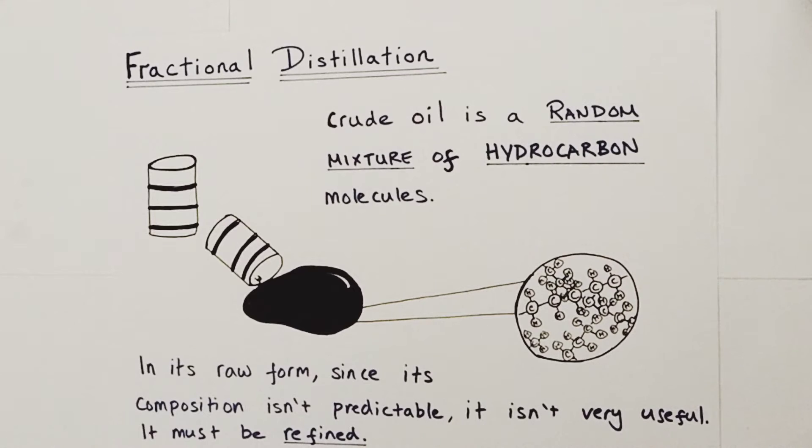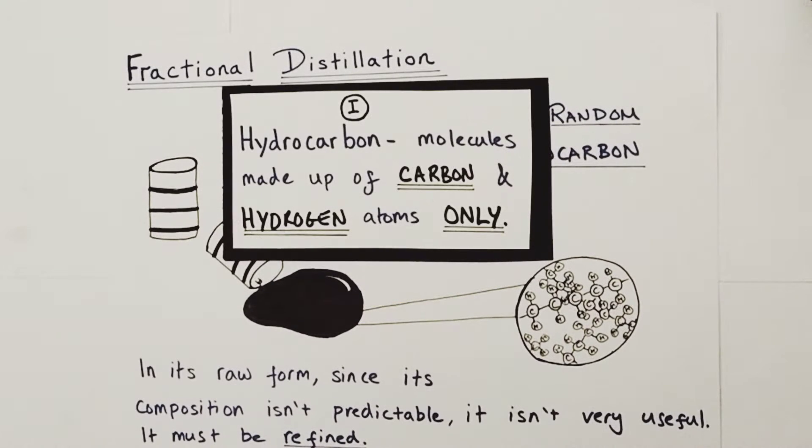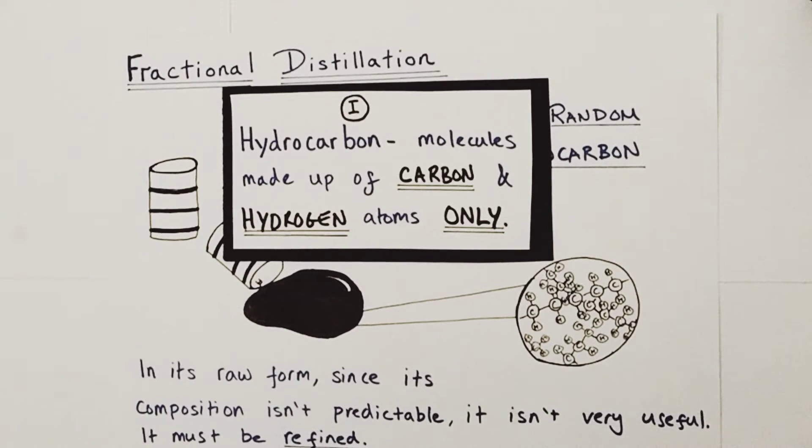I want to expand upon the term hydrocarbon. Hydrocarbons are molecules comprised of carbon and hydrogen atoms only, and they are really useful molecules. There are a plethora of different types of hydrocarbons, most notably the two families we'll be investigating in other videos: the alkanes and the alkenes.